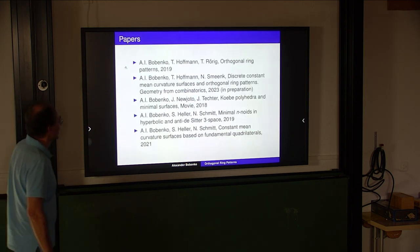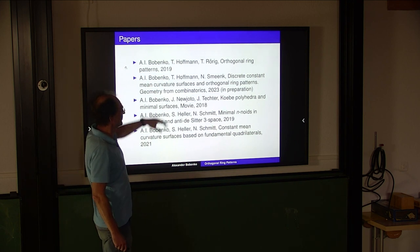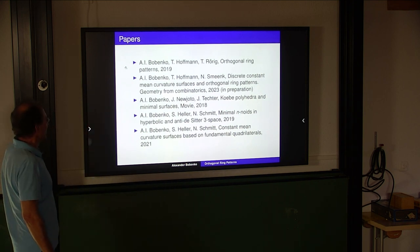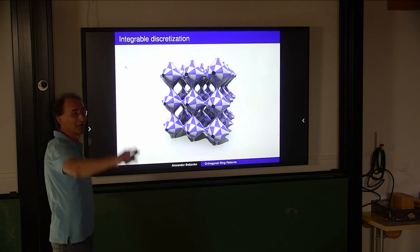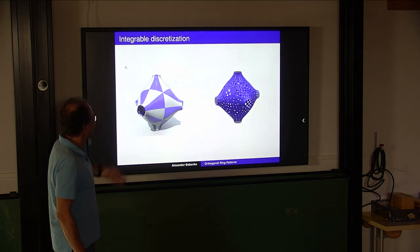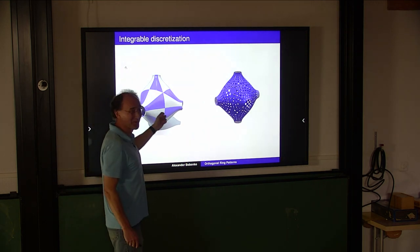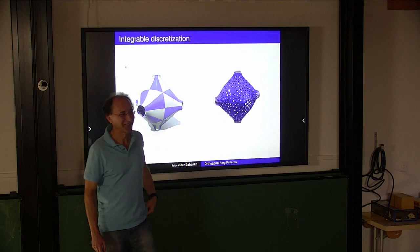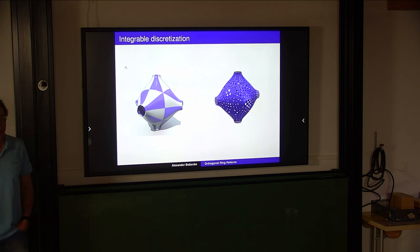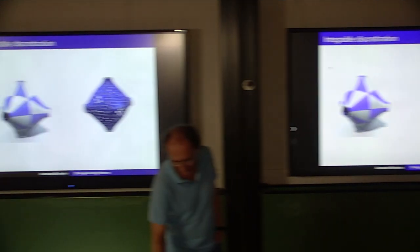These are some papers, some still in progress. That is the triply periodic surface you were asking about. And that's an example of an integral discretization of a smooth surface made of porcelain, with the corresponding discretization. Thank you for your attention.